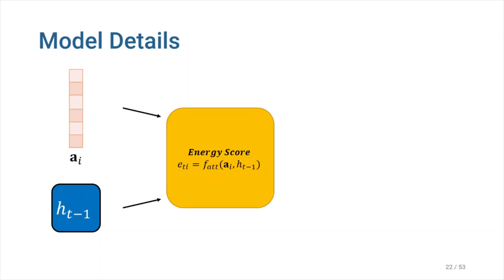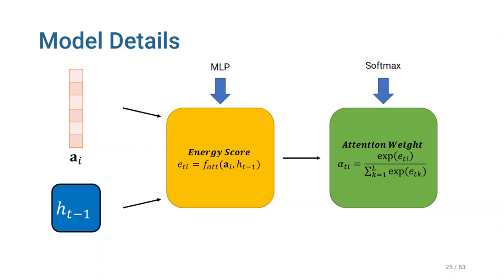But how is this context vector calculated? At each time t and location i in the image, we can calculate an energy score. For each location i, the mechanism generates a positive weight alpha i, which can be interpreted either as the probability that location i is the right place to focus for producing the next word, or as the relative importance to give to location i in blending the annotation vectors together. Simply put, this model uses a multilayer perceptron to calculate energy scores, followed by a softmax layer to produce the attention weights.